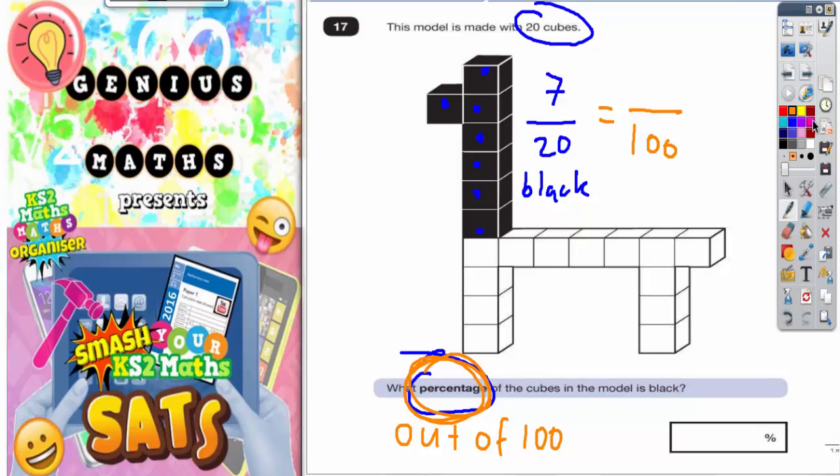So to do that, how do we get from 20 to 100? Well, you need to make it 5 times bigger. So 20 times 5 is 100. You can't just do that - you need to make 7 five times bigger as well. Whatever you do to the bottom, you've got to do to the top. So if it's 20 times 5 to make 100, we need to do 7 times 5, and that will give us 35.